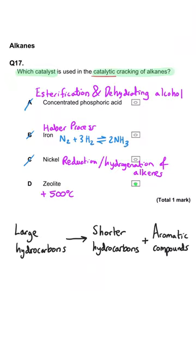So all three of the wrong answers are plausible because they're all catalysts that you need to know. But D is correct. It is the zeolite catalyst.